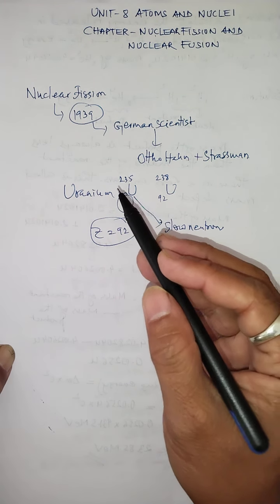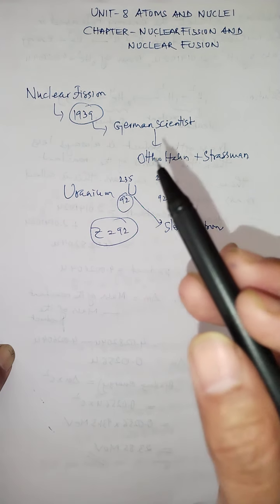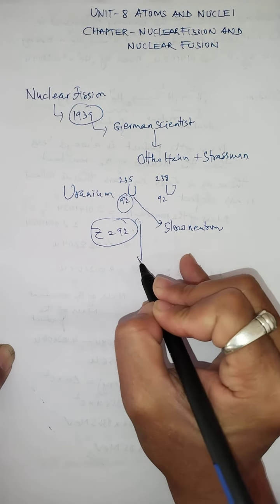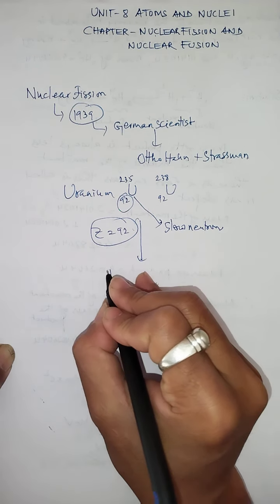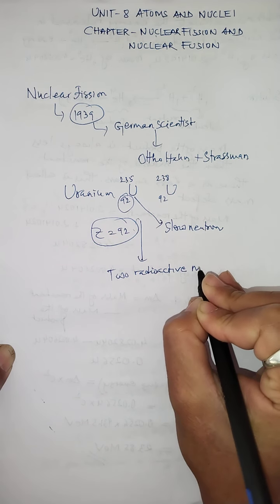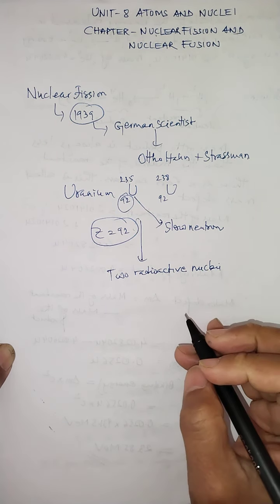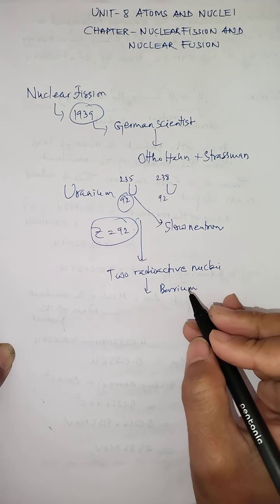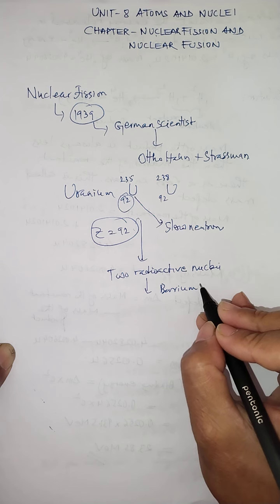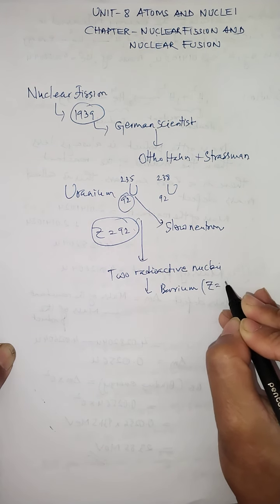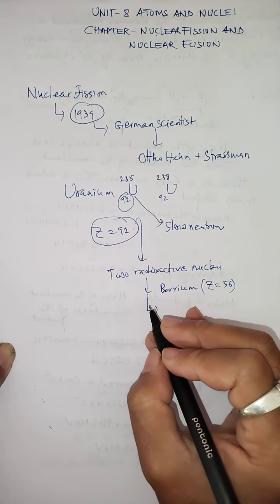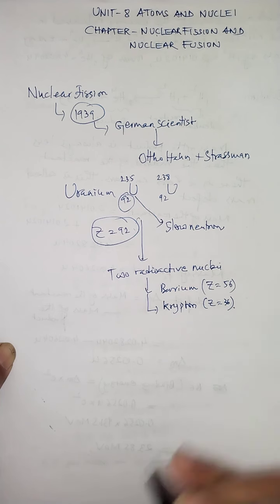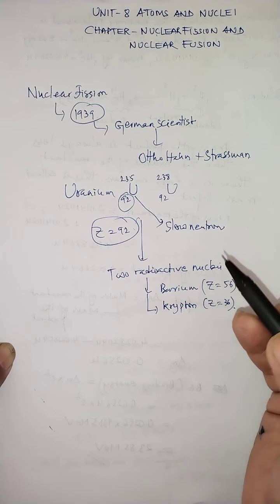When they bombarded uranium-92-235 with neutrons, the uranium nucleus was found to be split into two radioactive nuclei. One of the product nuclei was identified as barium with atomic number 56, and another radioactive nucleus found was krypton with atomic number 36.